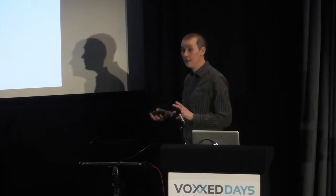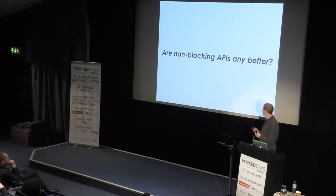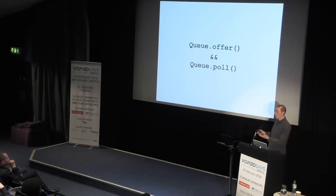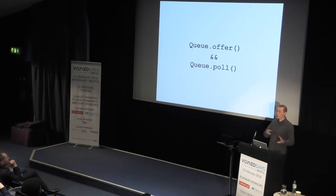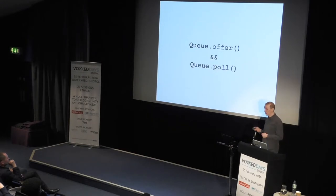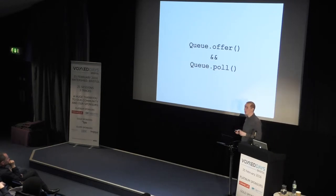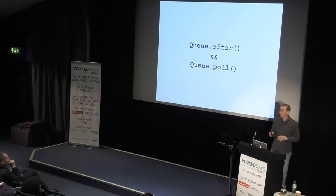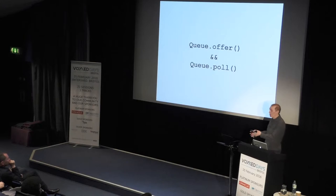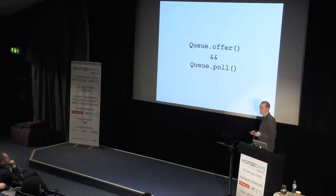Is the non-blocking API any better? Offer and poll. If you offer to a queue and there's no space available, it returns false straight away — you don't get blocked. You could go off and do some other work, or just try again. You don't drop into the operating system to arbitrate using condition variables. Similarly on the poll side, if there's something there you take it; if not, it returns null and you can do other work. The important question is: can you go off and do some other work? We're so often very synchronous — we don't think about whether there's other work we could be doing.